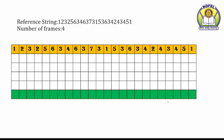Now let us see another example. This is the reference string given to you. How many page frames are there? Again 4 page frames. Initially all the frames are blank. Page 1 — there is a page fault, draw an arrow. 1, 2 — draw an arrow, there is a page fault. 1, 2, 3 — draw an arrow, there is a page fault. 2 is already in the memory — no page fault.